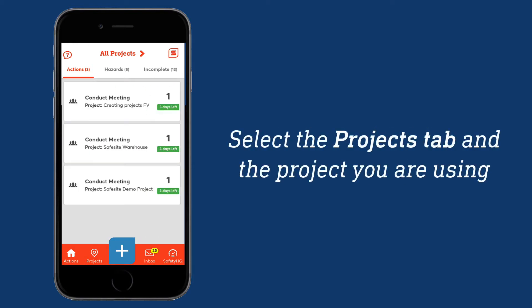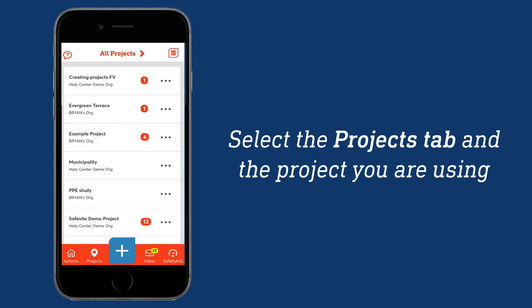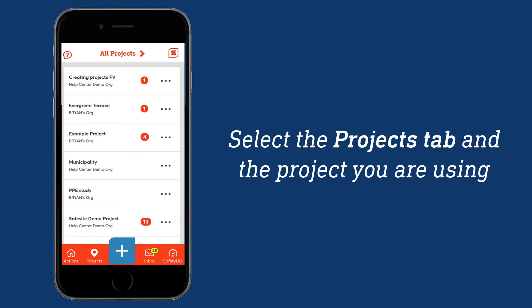To get started on completing safety actions for your company, first tap the Projects tab to verify the project you should be using. The project title and organization name will appear for each. If your organization's projects do not appear, please contact your organization administrator or SafeSite support.